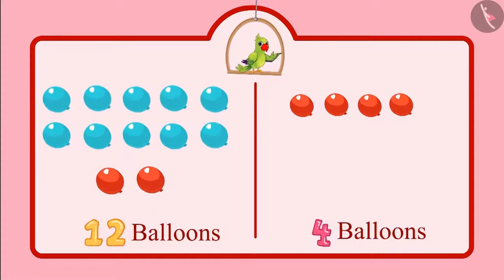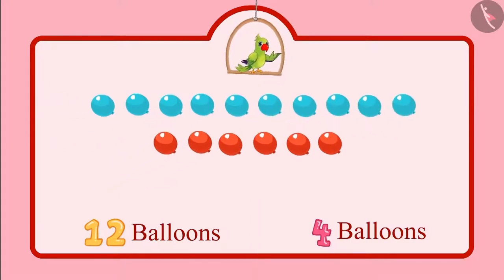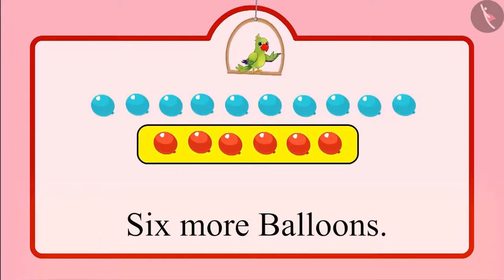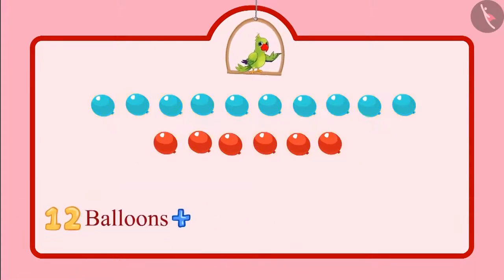So children, if we see all balloons together then we have one group of 10 balloons and six more balloons. That means we have a total of 16 balloons. Yes children, so 12 and 4 balloons make a total of 16 balloons.